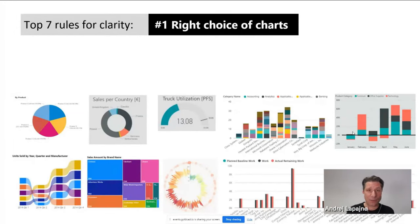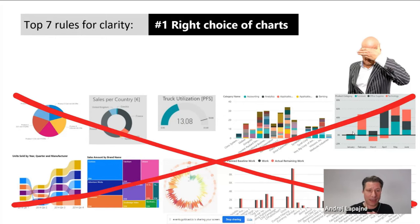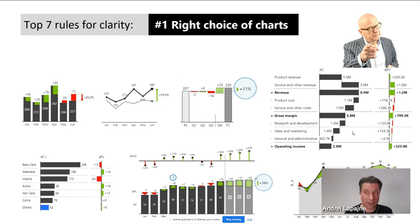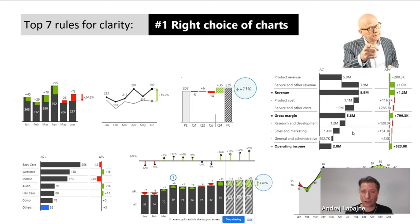Seven rules to achieve clarity: the first is the right choice of charts. Avoid pie charts, tree maps, and colorful charts that don't communicate the real situation — the changes, the variances. Replace those charts with clean, actionable, and understandable charts where data is presented in a consistent way, with a consistent notation, almost like a sign language for data. This is also one of the cornerstones of Zebra BI visuals, which support the IBCS standard for business communication.